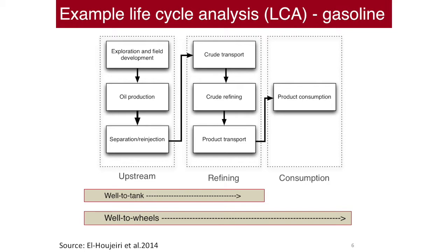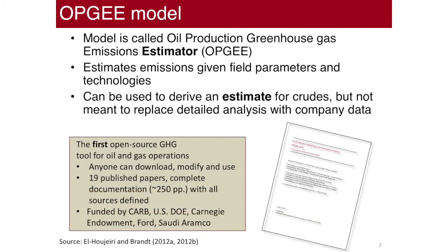Here's an example of an oil value chain. You've got exploration, separation and reinjection. Then you transport it, refine it, send the product to the gas station and then you consume it. Some terminology here, well to tank is usually here. Well to wheels includes the product consumption in your vehicle. We built a model for this. We've been working on it since 2009 or so. We call it OPGEE, the Oil Production Greenhouse Gas Emissions Estimator. Estimator is in bold here. What OPGEE does is it estimates emissions from an oil operation given engineering characteristics of that field. Things like depth, the quality of the oil, how much water is going to be produced, etc.